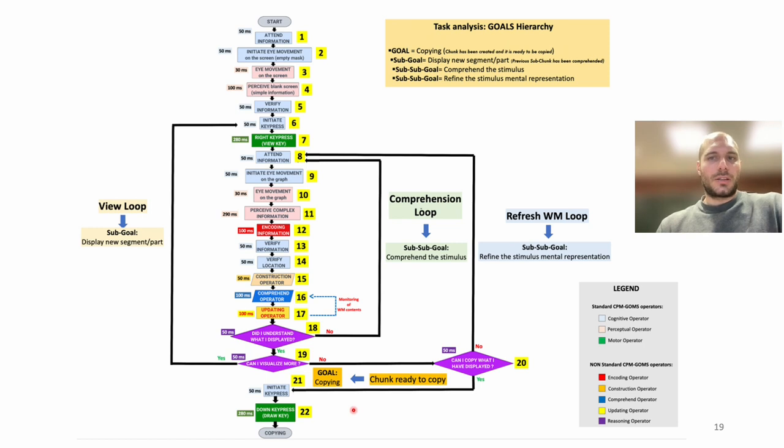We designed our model around the main goal, which is copying, and loops in the form of decision boxes representing the sub-goal through the view loop, which is necessary to display the next part of the stimulus, and two sub-sub-goals: the comprehension loop required to comprehend the stimulus, and the refresh working memory loop required to refine the mental representation before copying the stimulus.